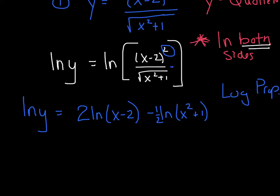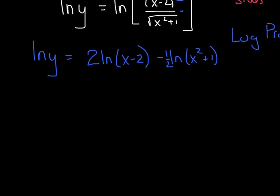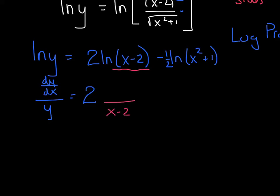Now we're ready to finally take the derivative, and I want to be clear that we do have implicit differentiation because we have a y and an x here. The natural log of y is du over u, so my u is y, my derivative is dy/dx, equals: I've got a coefficient of 2 - remember that's just a coefficient - so now I'll do my du over u for ln, my u is x minus 2, its derivative is 1, minus one half as my coefficient, ln's du over u, my u is x squared plus 1, its derivative is 2x.